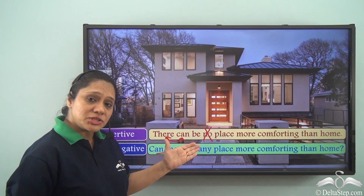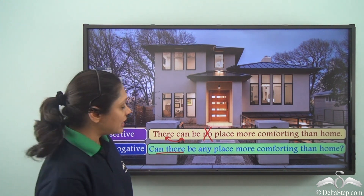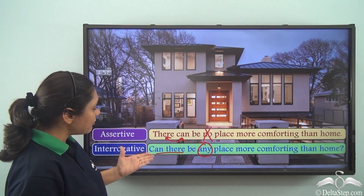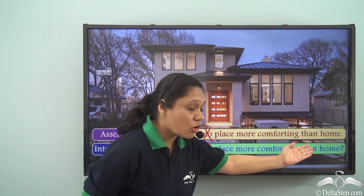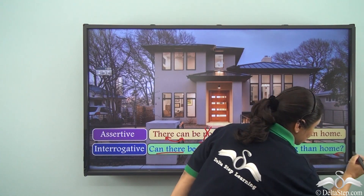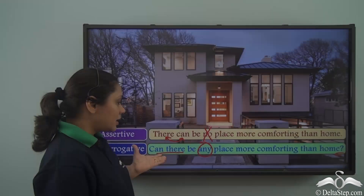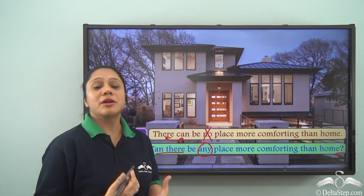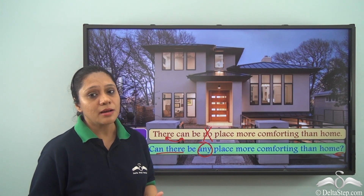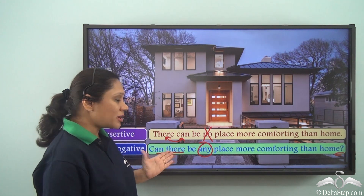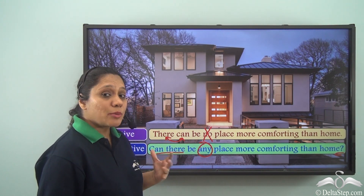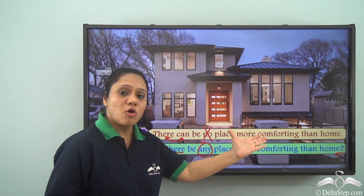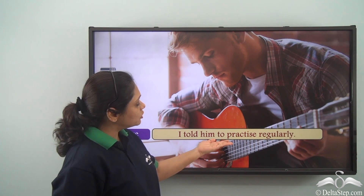'No,' which appears in the original assertive sentence, is dropped and replaced with 'any.' So 'no place' becomes 'any place,' giving us 'Can there be any place more comforting than home?' This is known as a rhetorical question. A rhetorical question does not expect an answer but is trying to drive a point across — in this case, emphasizing that there can be no place more comforting than home.